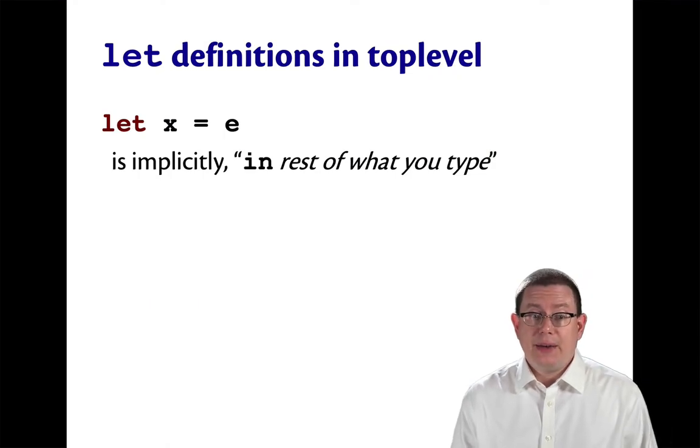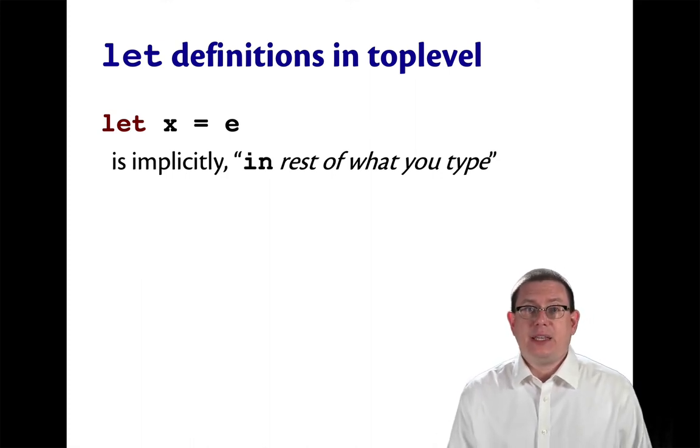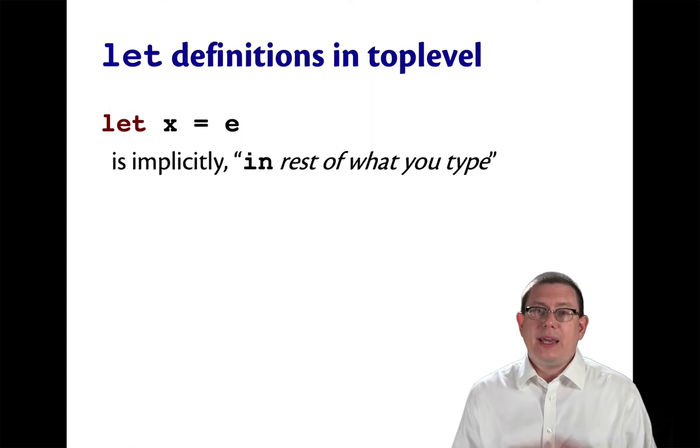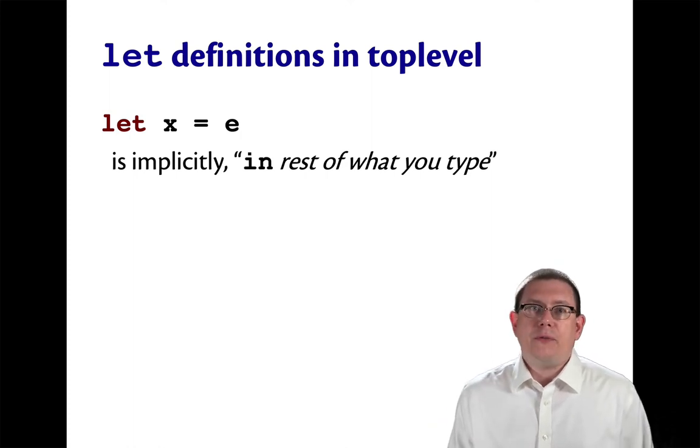So how does x itself come to have meaning here in the top level? Well, the way to think about that is that implicitly, every let definition in that top level is actually like just the beginning of a let expression. Implicitly, when I say let x equal e, what I'm really saying is in the rest of what I'm going to type in the future in utop.